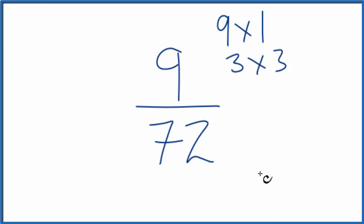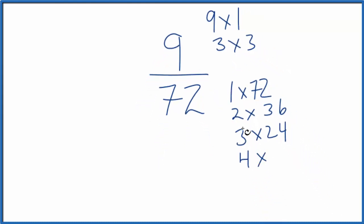For 72, it's a little bit more challenging. 1 times 72, 2 times 36, 3 times 24, 4 times 18, 6 times 12. Man, there's a lot. And 8 times 9.